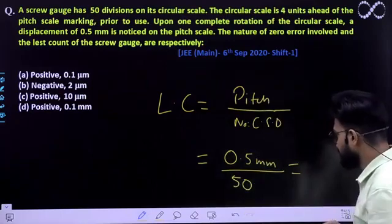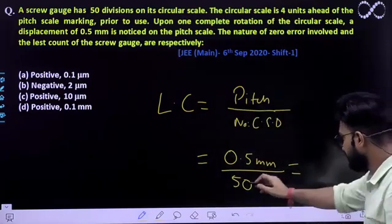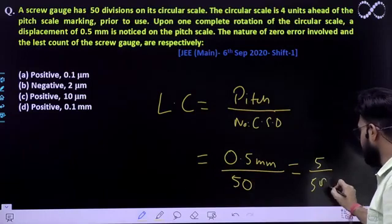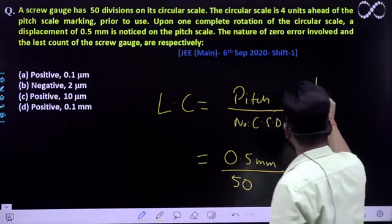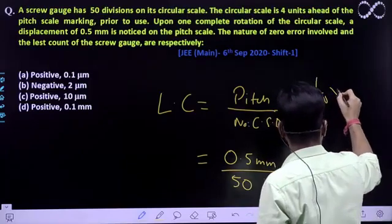Which is comes, which comes out to be, isko solve karayenge. Thik hai? To you will be getting 5 by 500 mm, so which is nothing but 1 by 100 mm.